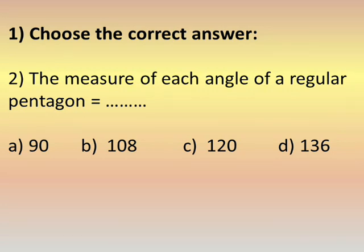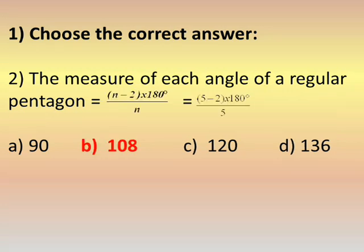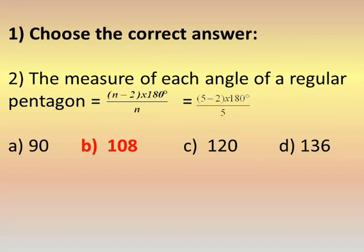Number two: the measure of each angle of a regular pentagon. The rule is (n minus 2) times 180 divided by n, where n is the number of sides. A pentagon has five sides, so n equals 5. That gives (5 minus 2) times 180 divided by 5, which equals 108 degrees.